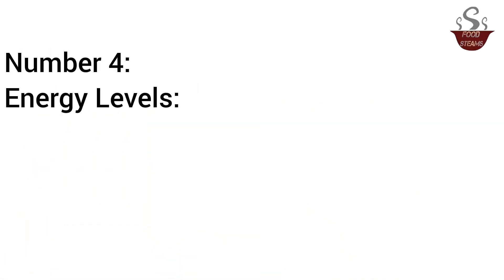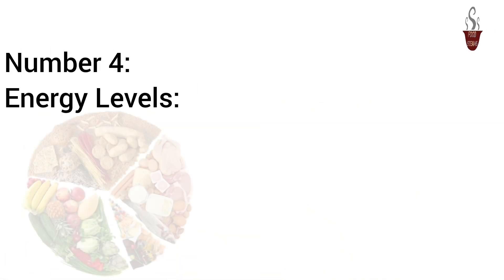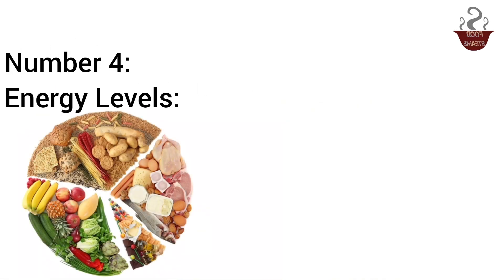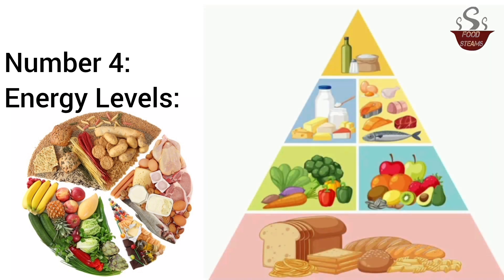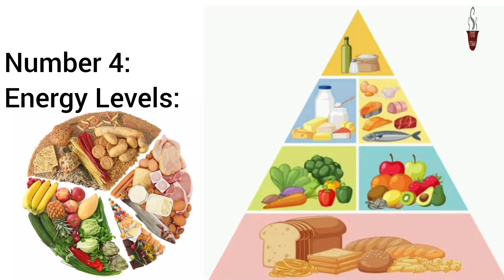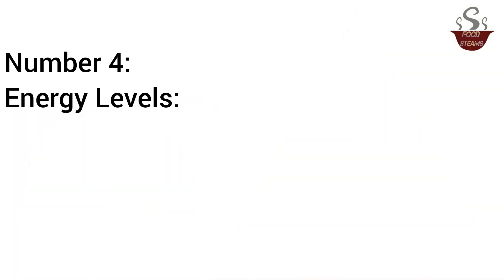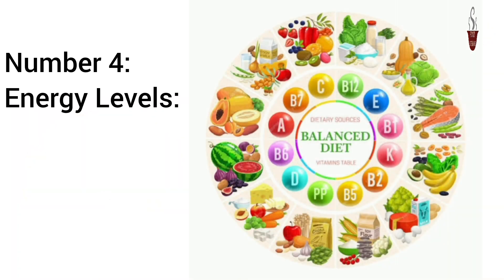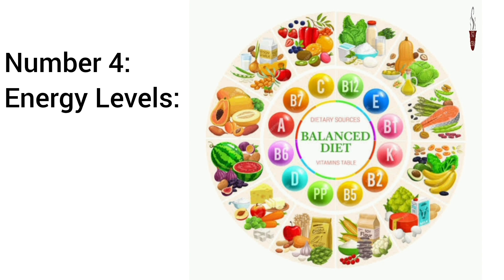Number 4: Energy Levels. A well-balanced diet, as suggested by the food pyramid, provides sustained energy throughout the day. It includes carbohydrates for energy, proteins for muscle maintenance, and fats for various bodily functions.